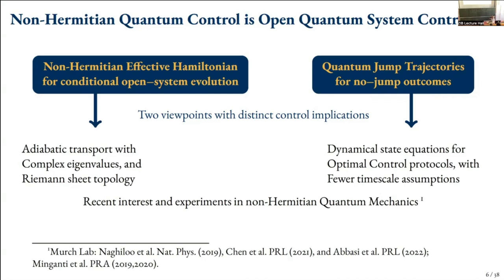There are experiments connected with a group using superconducting qubits — that's the model paradigm for this part of the talk. We look at quantum jump trajectories: when our two-level system interacts with photons in a microwave cavity, if we see a photon emitted that's a jump outcome, and if we don't, that's a no-jump outcome. We can follow the non-Hermitian system dynamics by studying just the no-jump outcome, post-selecting on no-jump, and applying optimal control protocols on those no-jump dynamics.